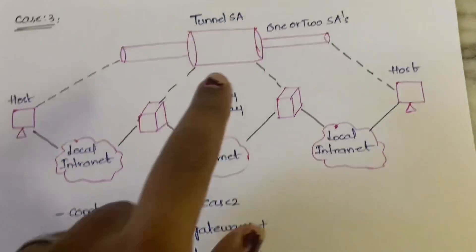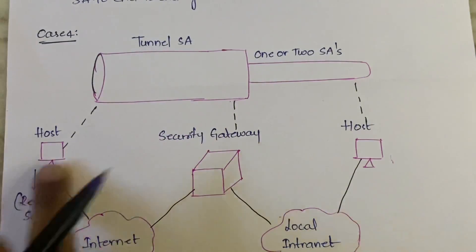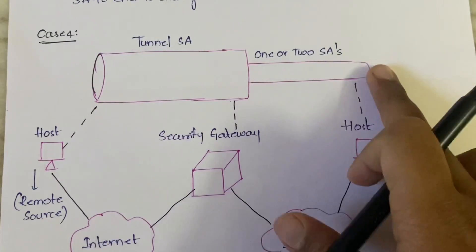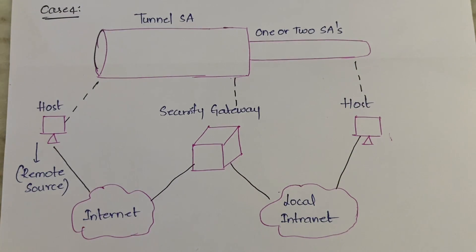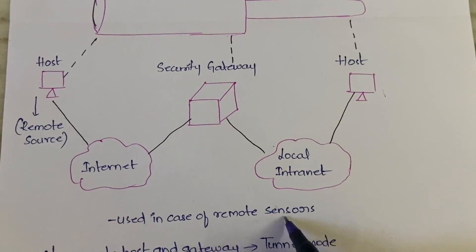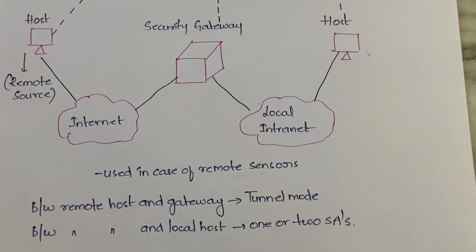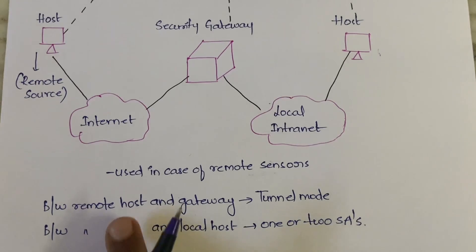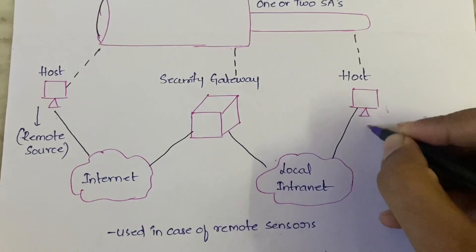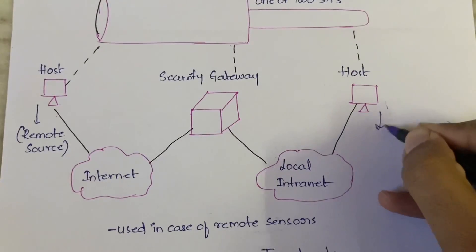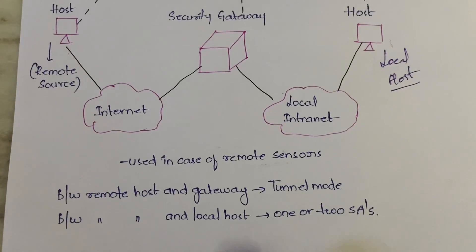In case three we had normal SAs on both sides of the tunnel, but in case four we have them on only one side. The tunnel provides security to the host and to the gateway, and the simple security association provides security to the other host. Case four is mainly used in the case of remote sensors — between the remote host and the gateway, the tunnel provides security, and between the remote host and the local host, normal simple security associations provide security.